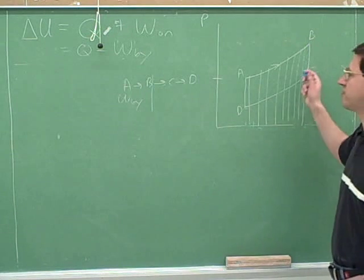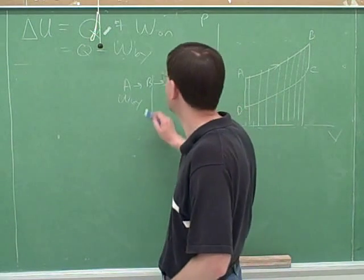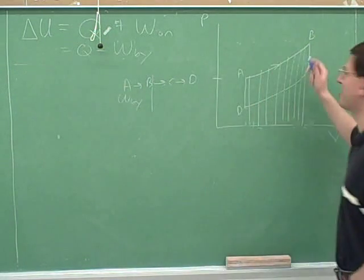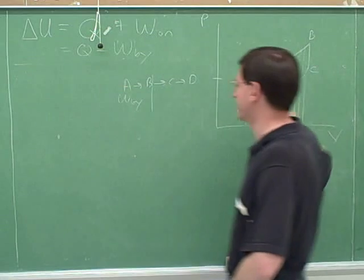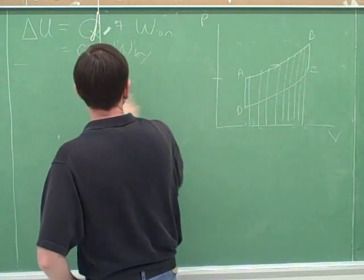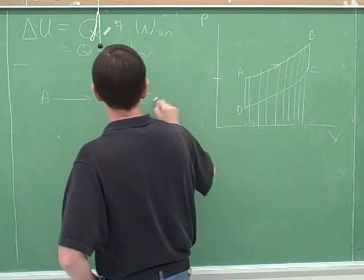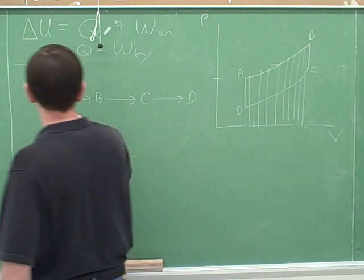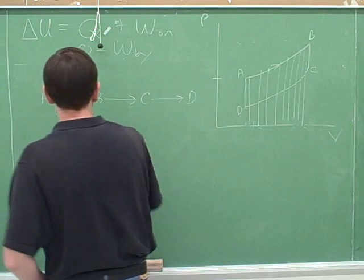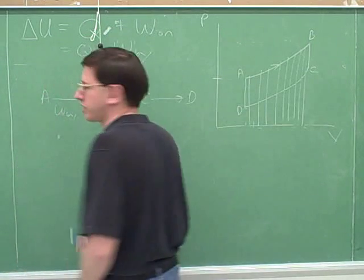Okay? Now how about the work that's being done from B to C? What can we say about that work? The volume is constant. Right. I was trying to draw it constant anyway. So I was trying to draw this vertically as you saw. So that work... This work should be zero.